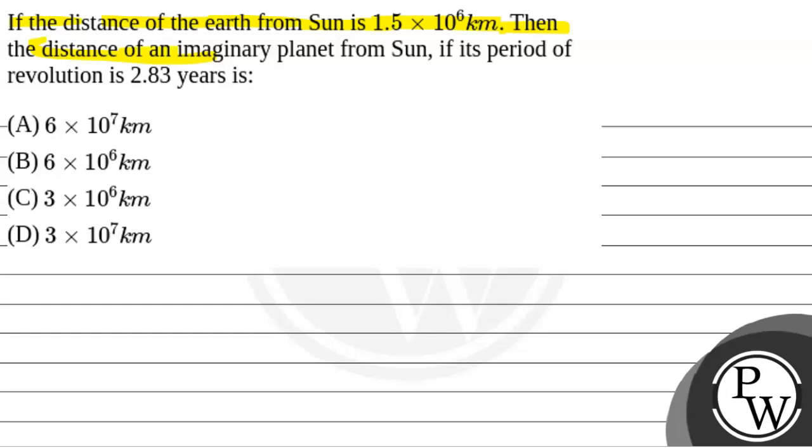kilometer, then the distance of an imaginary planet from sun if its period of revolution is 2.83 years. We will solve this question.